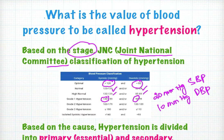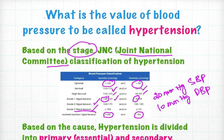Increasing from high normal, we get grade 1, grade 2, and grade 3 hypertension. If the systolic blood pressure alone is greater than 140 mmHg but the diastolic blood pressure is less than 90, that condition is called isolated systolic hypertension.